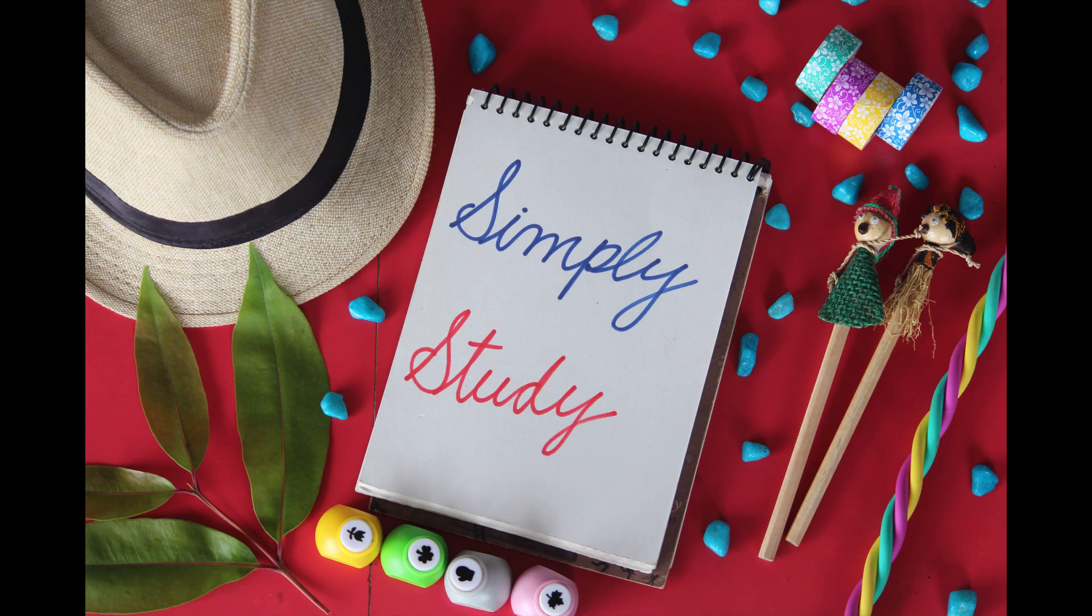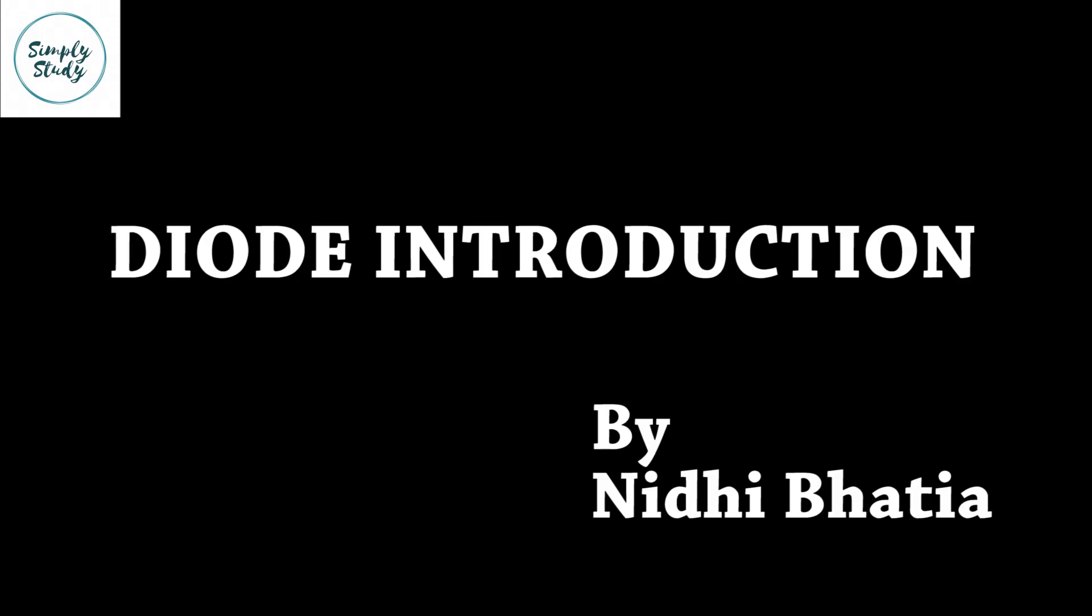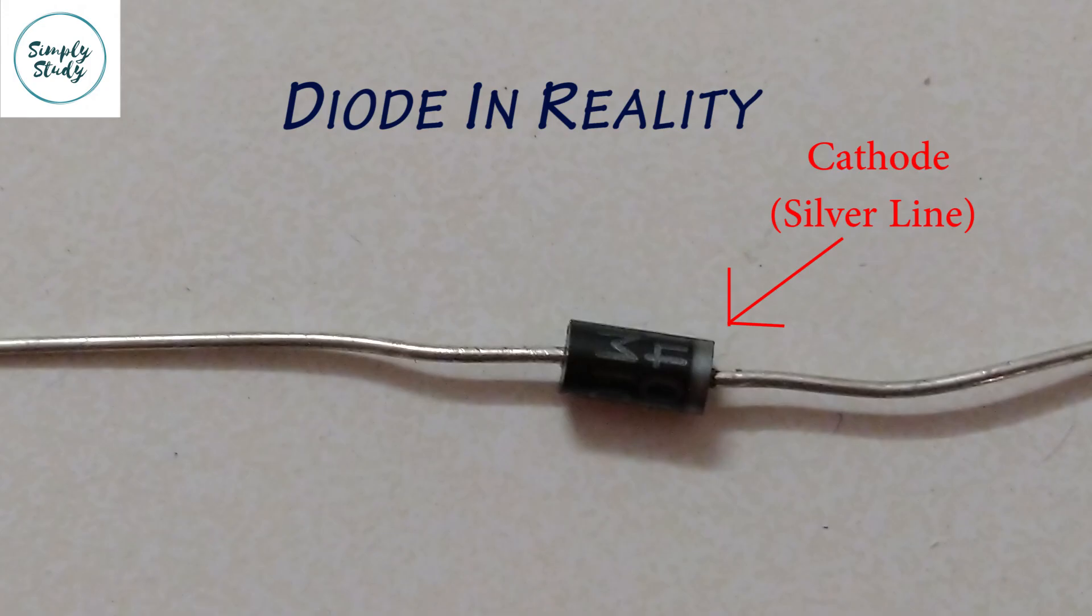Hello friends, welcome to Simply Study. Today I'll be explaining how a diode works. Let's first see how a diode looks in reality. So this is how a diode looks - it is black in color and has a silver line on its cathode.